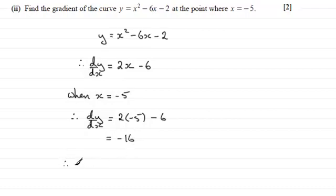So in summary then, therefore what we've got is the gradient equals minus 16 when x equals minus 5.